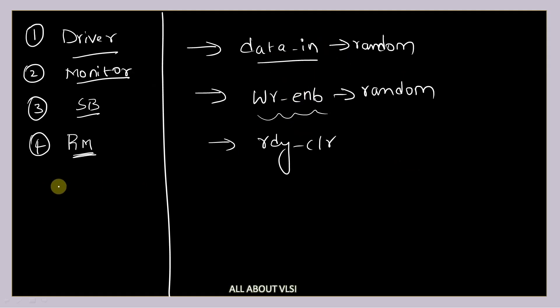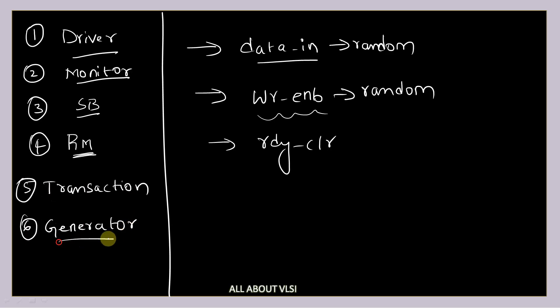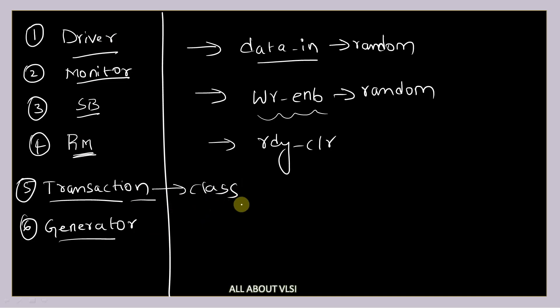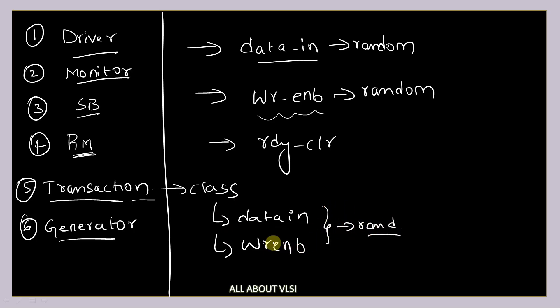This randomization is not going to be performed signal by signal. We are going to have two extra files: a transaction file and a generator file. The transaction file is a class which is going to have the properties data_in and write enable declared with the rand keyword. So using the rand keyword we declare these two properties.